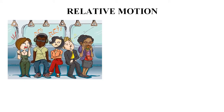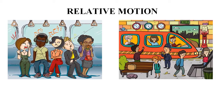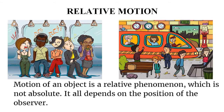Coming to the concept of relative motion: if you are sitting in a train along with your co-passengers and I ask what the co-passengers are doing, you would say they are sitting idle. But if I put the same question to a person standing on the platform, he would answer that the passengers are traveling at a speed equal to the speed of the train. This means motion is a relative phenomenon — it all depends on the position of the observer.